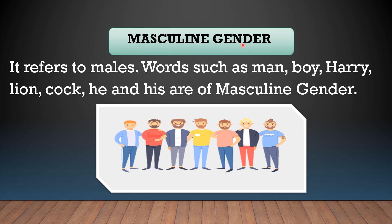Masculine gender refers only to males. Words such as man, boy, Harry, lion, cock, he and his are of masculine gender. We say: he is a man, he is a boy, that boy's name is Harry, that he is a lion — lion comes under male, that is masculine gender. Cock is a masculine gender. He and his are used only for males. So these words all belong to masculine gender.